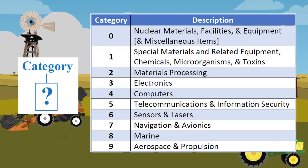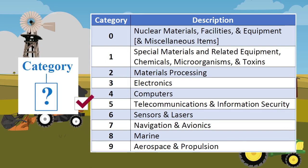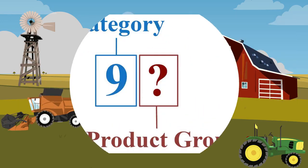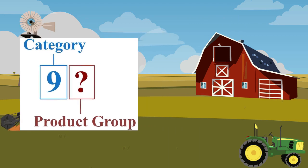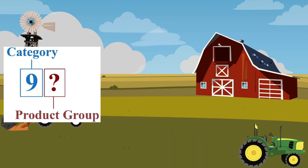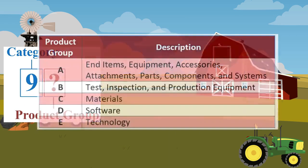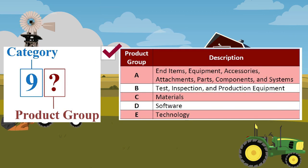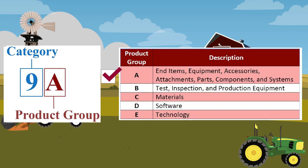That's understandable. Let's take a look at the categories. Category 9 covers propulsion — that ought to be a good start. Now that we have the category, we need to determine the product group. The engine would seem to fit in the end item and equipment grouping, so it's likely to be in product group A.